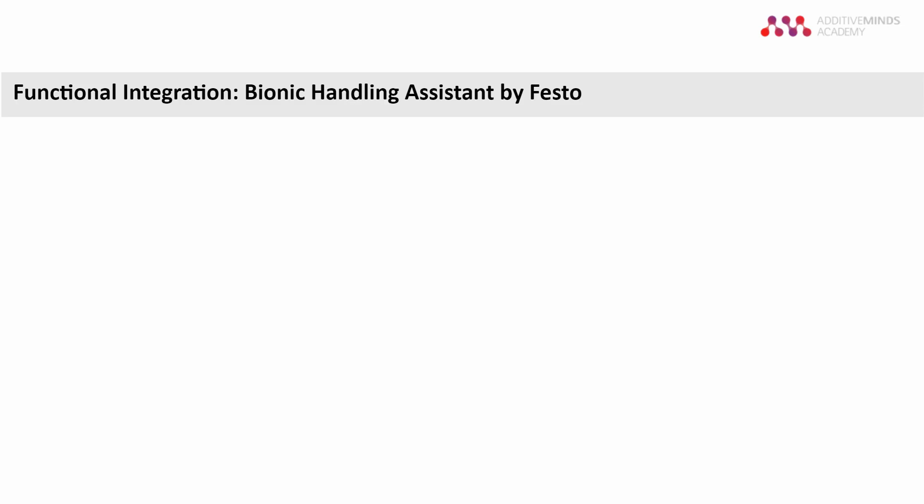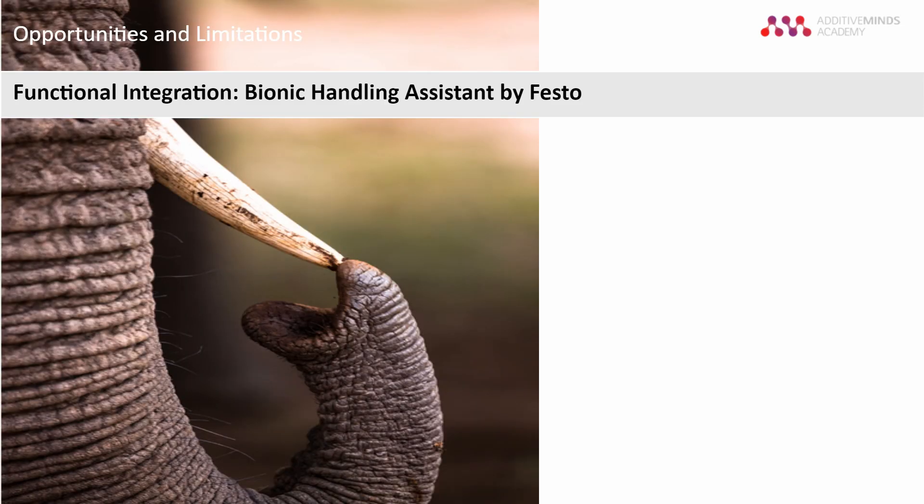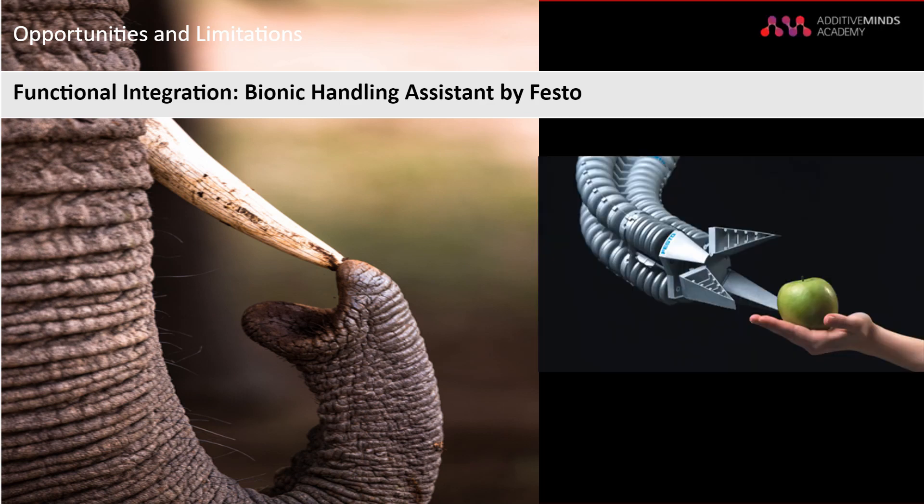A great example for the characteristic freedom in design is to realize geometries and structures which typically only exist in nature. Take this trunk of an elephant as an example. When imagining how it moves its trunk, we can adopt this principle also for a gripper designed by Festo.